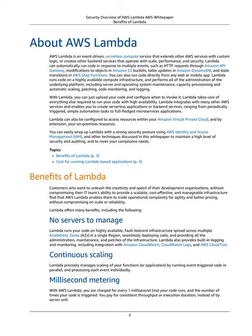Lambda integrates with many other AWS services and enables you to create serverless applications or backend services, ranging from periodically-triggered simple automation tasks to full-fledged microservices applications. Lambda can also be configured to access resources within your Amazon Virtual Private Cloud, and by extension, your on-premises resources. You can wrap Lambda with a strong security posture using AWS Identity and Access Management (IAM) and other techniques to maintain a high level of security, auditing, and compliance.